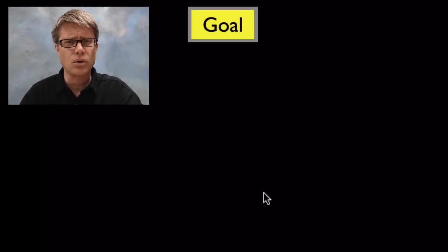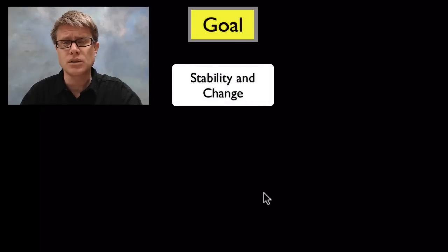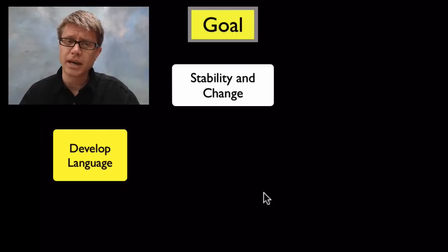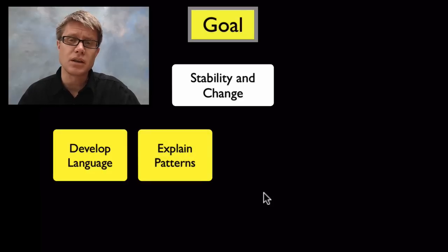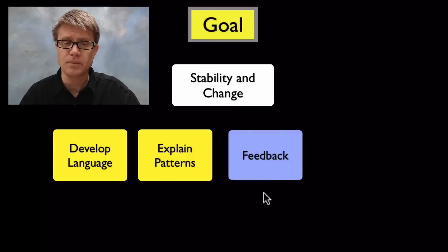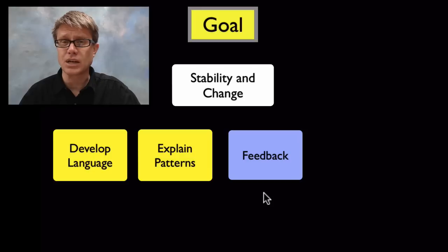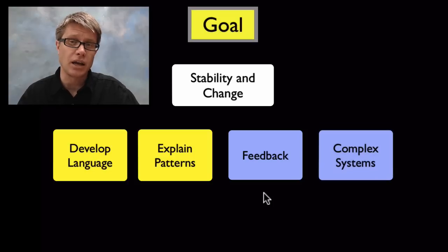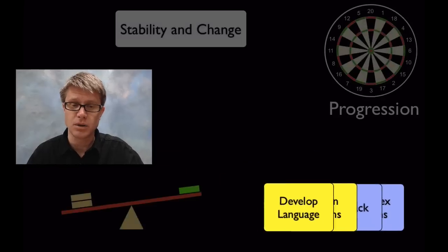What is our goal in the science classroom? We want students to understand stability and change, and the progression should be taught as follows. In early elementary, we develop the language of stability, change, and feedback. In upper elementary, we explain patterns and how patterns change over time. In middle school, we talk about the specifics of positive and negative feedback loops. In high school, we understand how very complex systems work and how they maintain a stable internal environment.